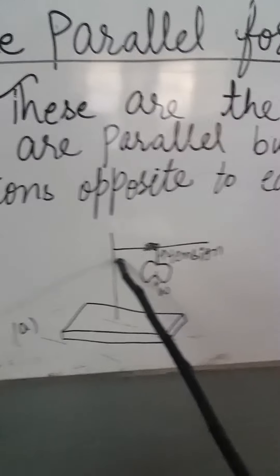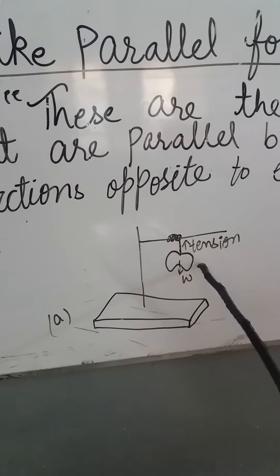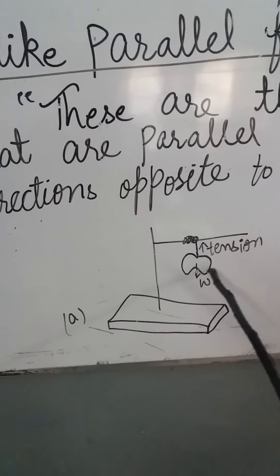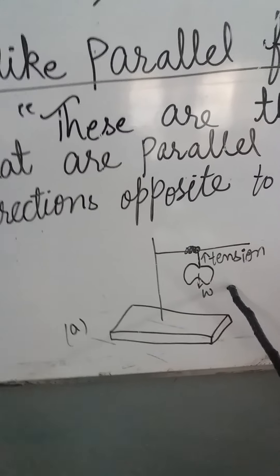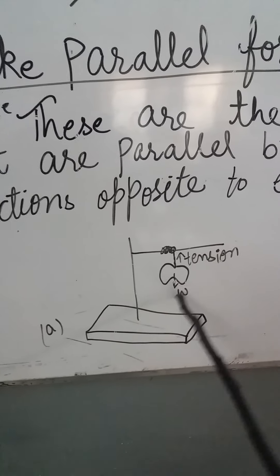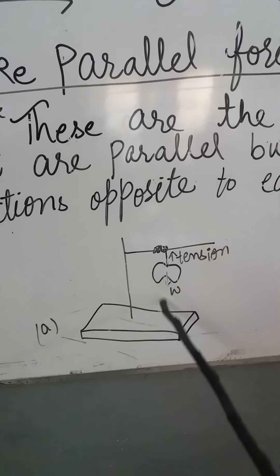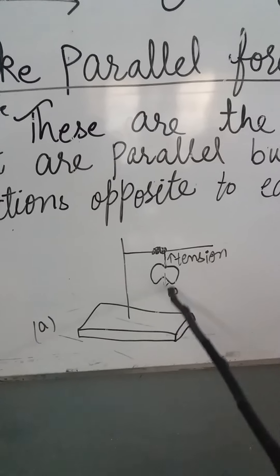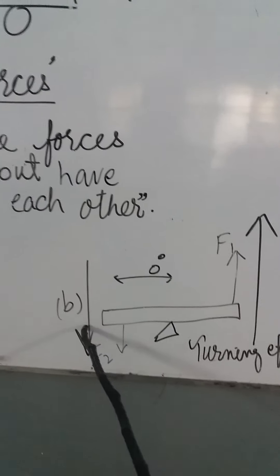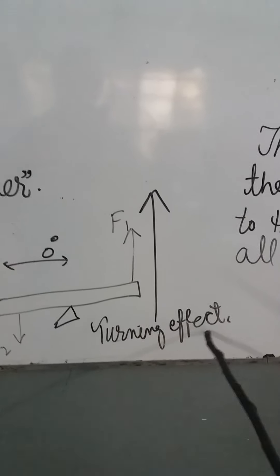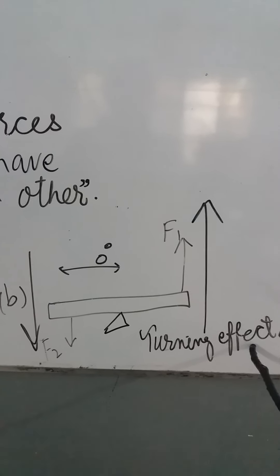In the apple-string example, the forces are parallel and in opposite direction, but they will not produce a turning effect. Because the tension going upward and the weight going downward act at the same action point. But in the seesaw example, one action point is here and the other action point is there — they have a zero degree angle and different action points, so they must produce a turning effect. These are called unlike parallel forces.